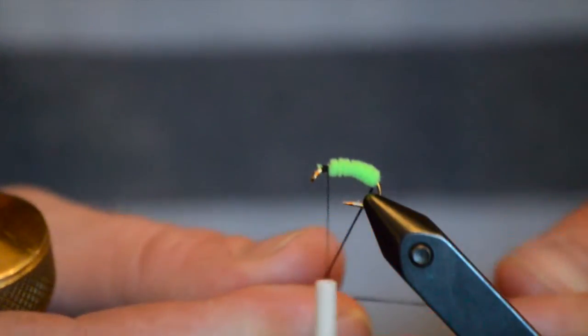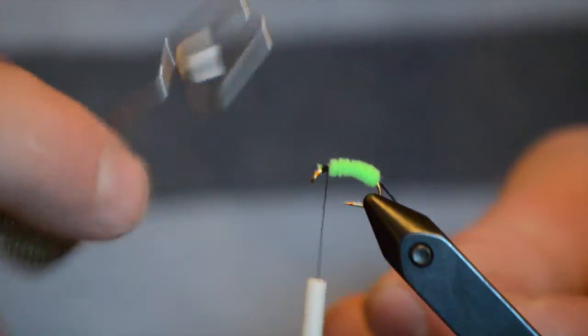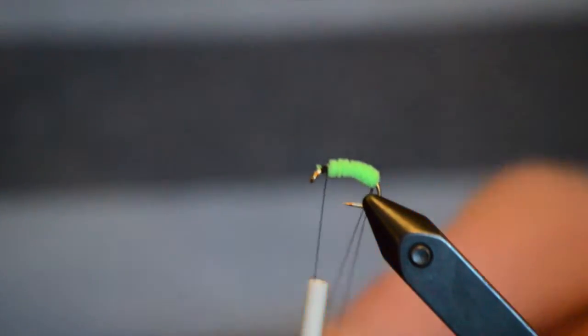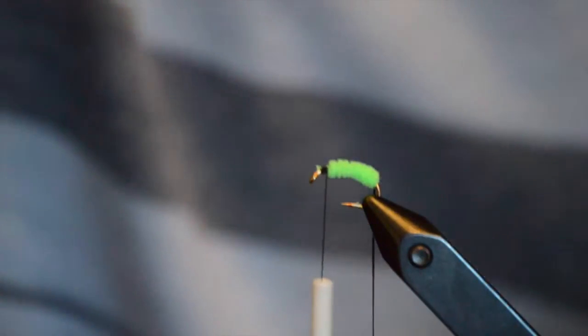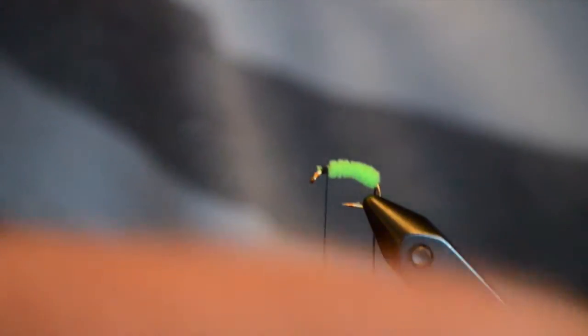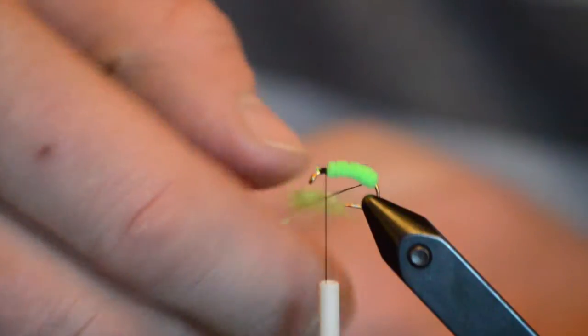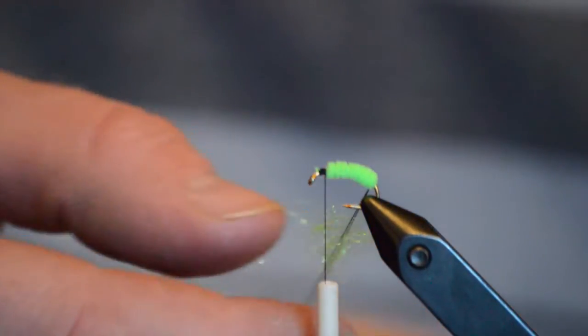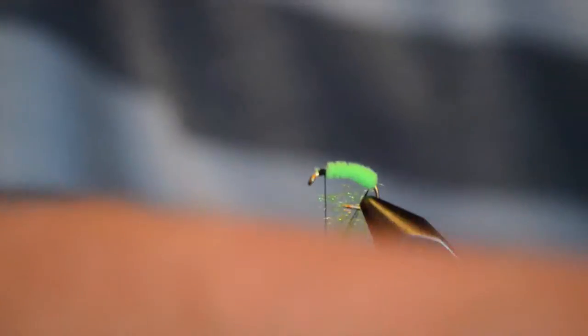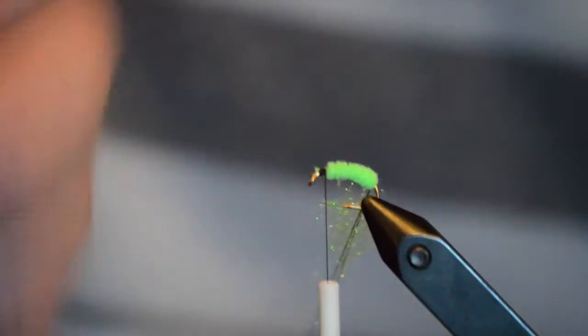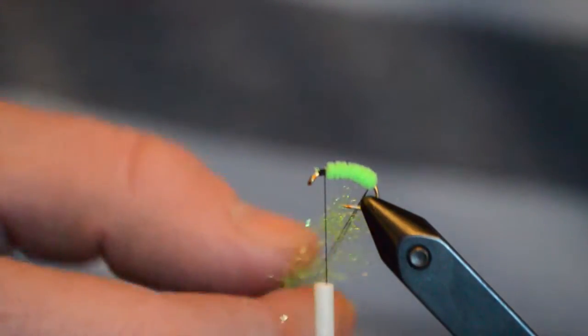We'll insert the loop that we created earlier and we'll put that in the little teeth of the dubbing tool. And then we're going to get the ice dubbing. In this case since we're tying an olive or a fluorescent green caddis we're going to use the green ice dubbing material. We'll slide that up. It doesn't need to be too thick. Fairly sparse since we're just creating a rib for this pattern to add just a little bit buggy shape to it.